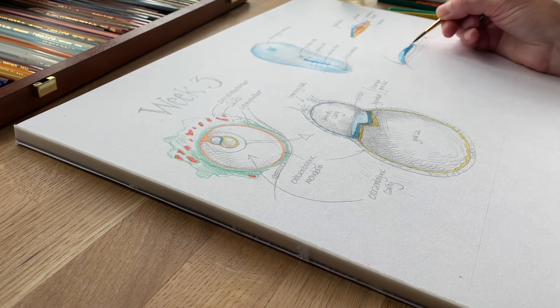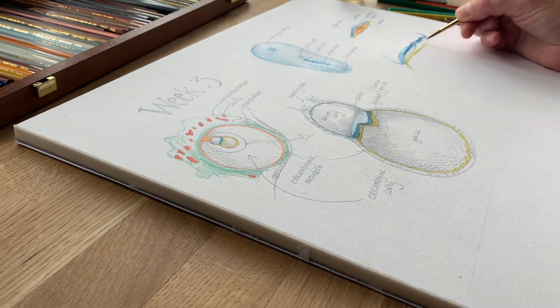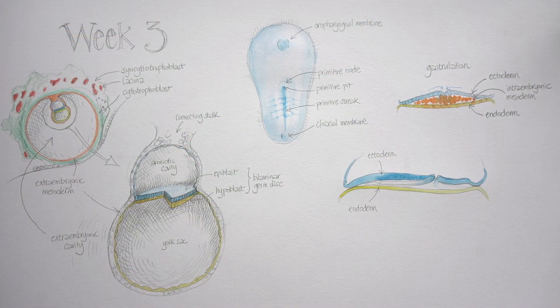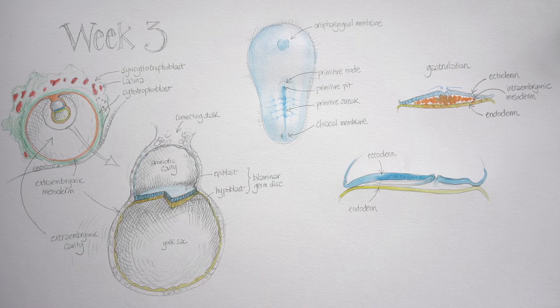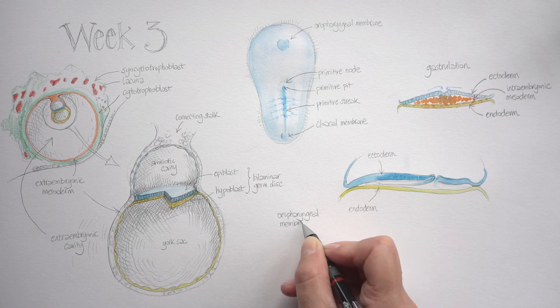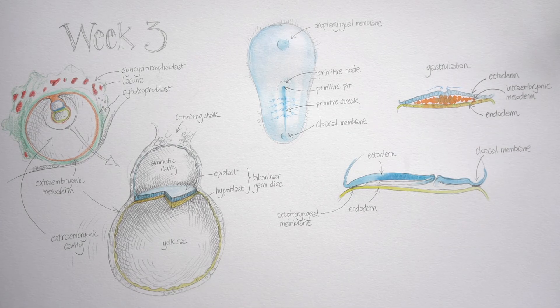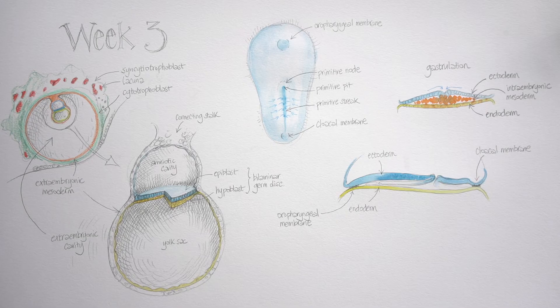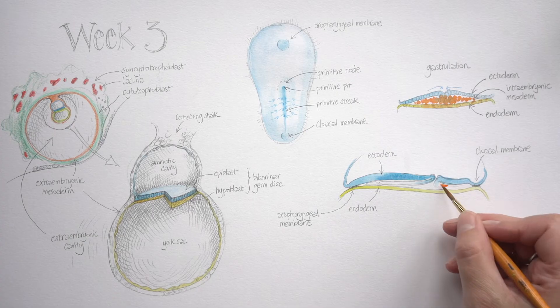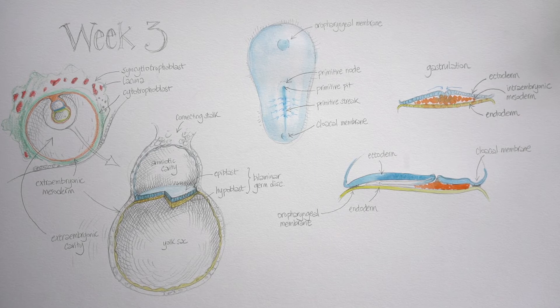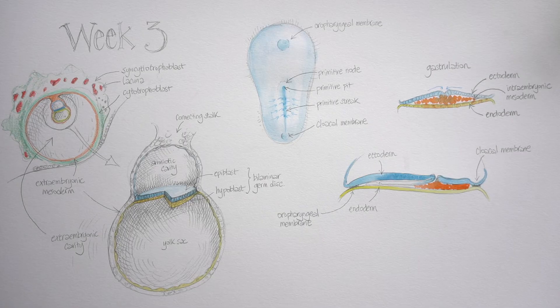Having drawn that cross-section through the primitive streak, now I'm drawing a longitudinal section from the head down to the tail of the embryo so that we can see those layers again. There's the ectoderm on top facing the amniotic cavity, the endoderm on the bottom facing the yolk sac, and we can see where the ectoderm and endoderm are firmly pinched together at the oropharyngeal membrane and the cloacal membrane. We can also see that mesoderm, that jam in the sandwich, starting to fill up the gap away from those two membranes, and something very interesting is happening at the primitive pit.